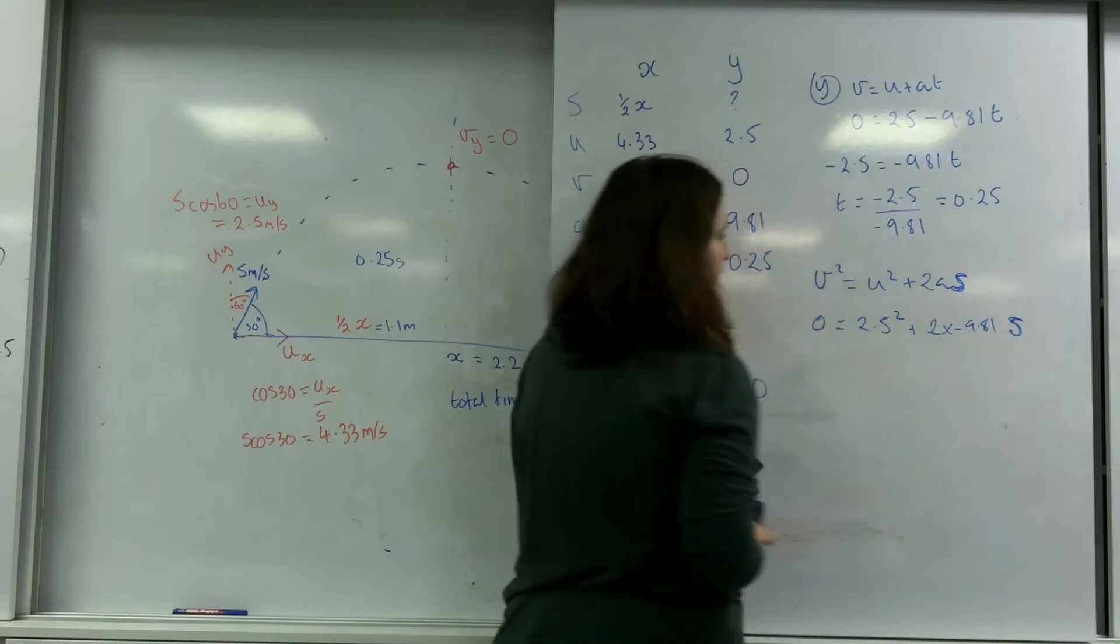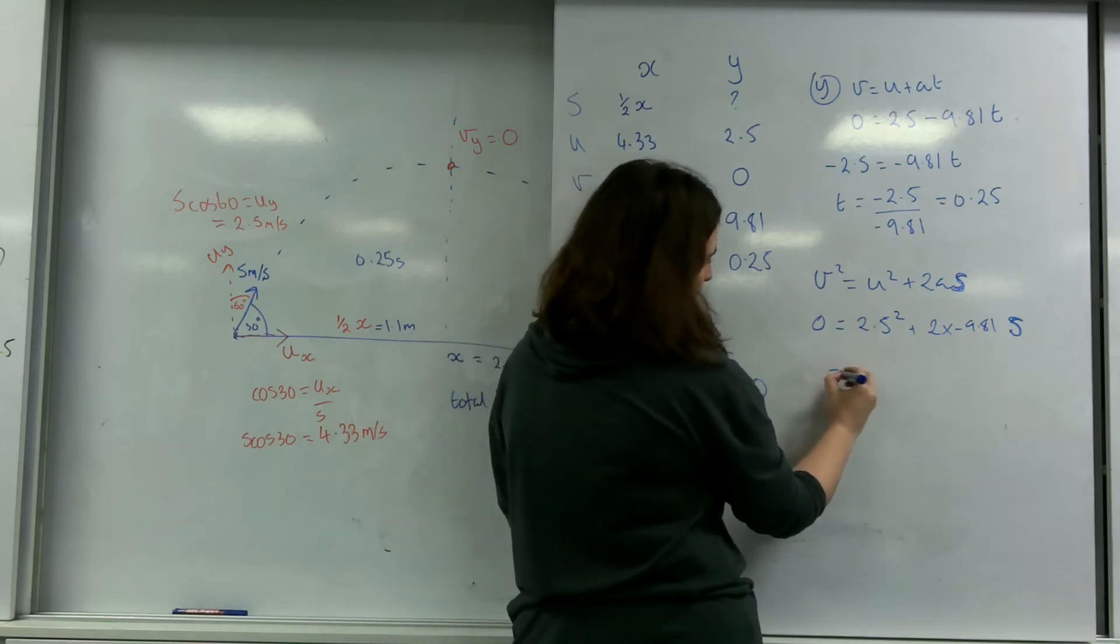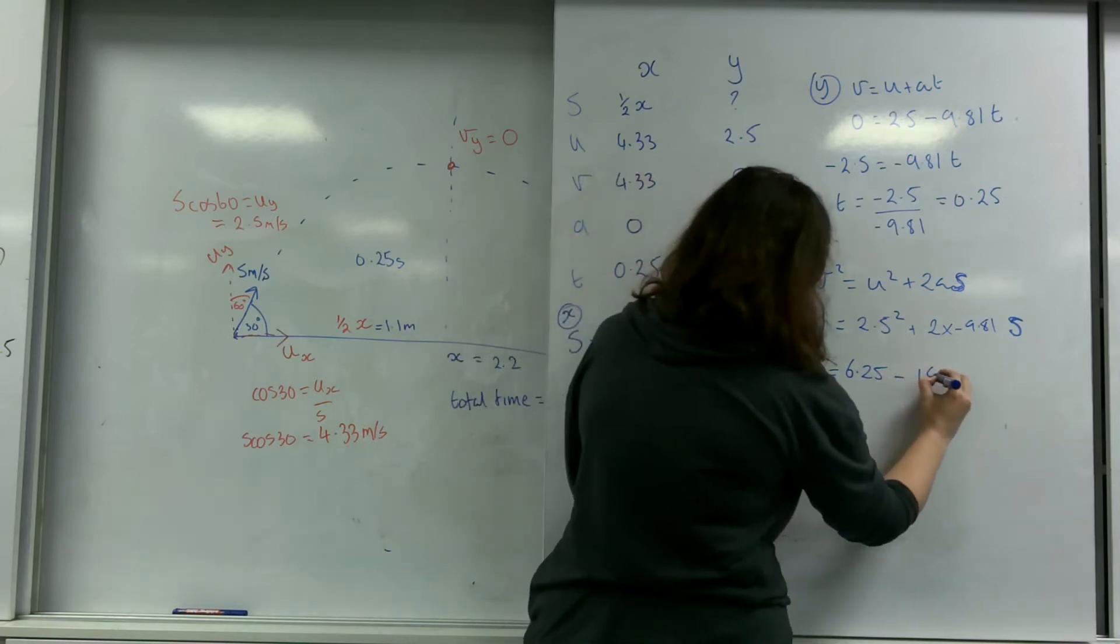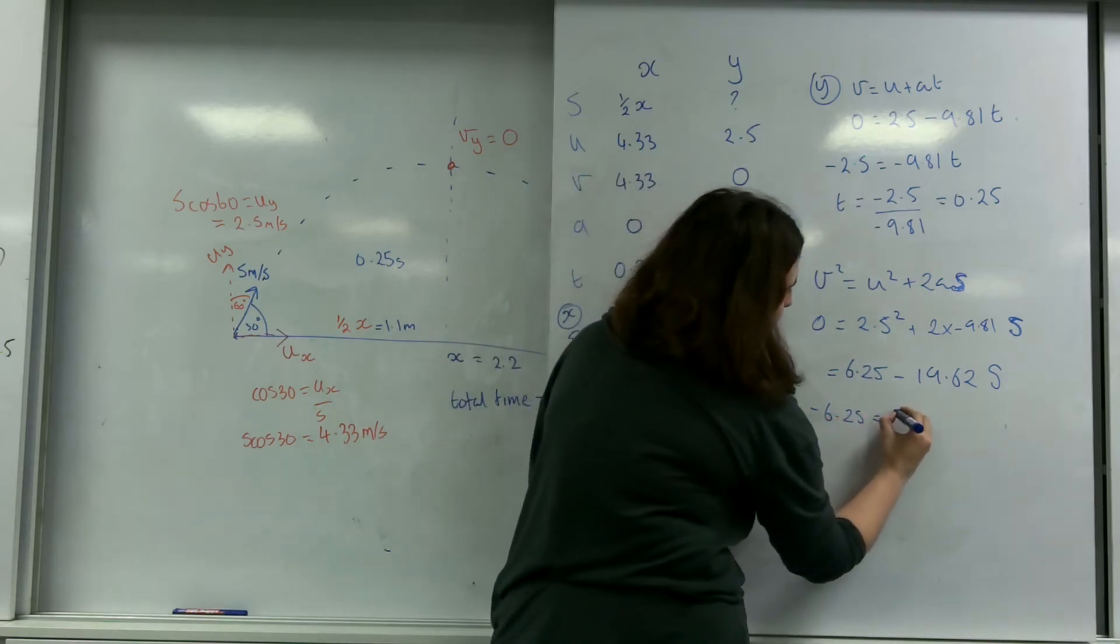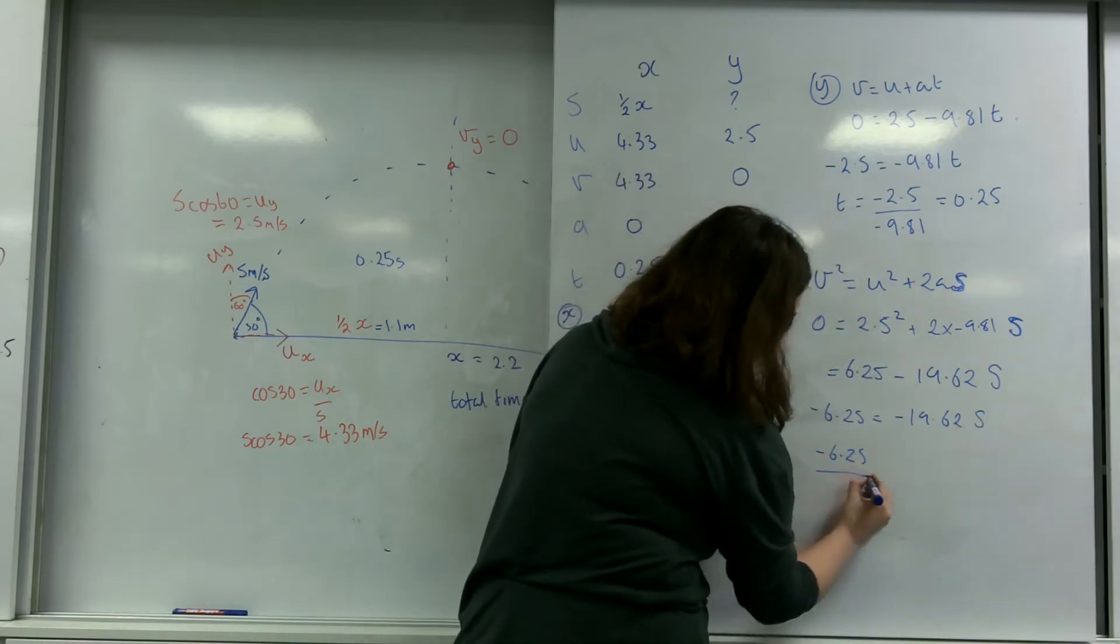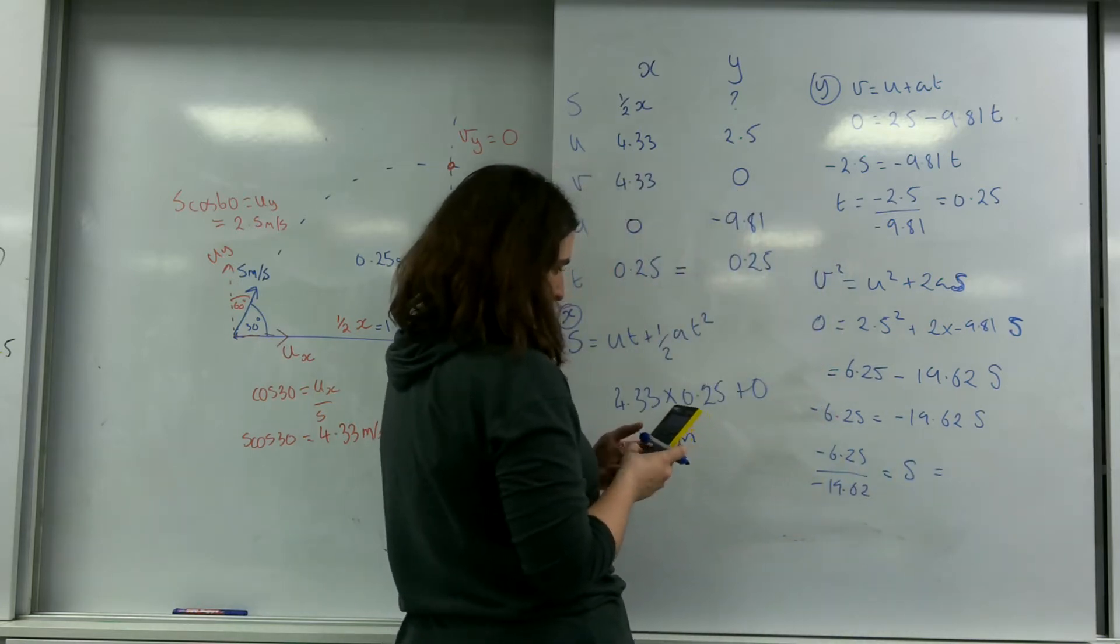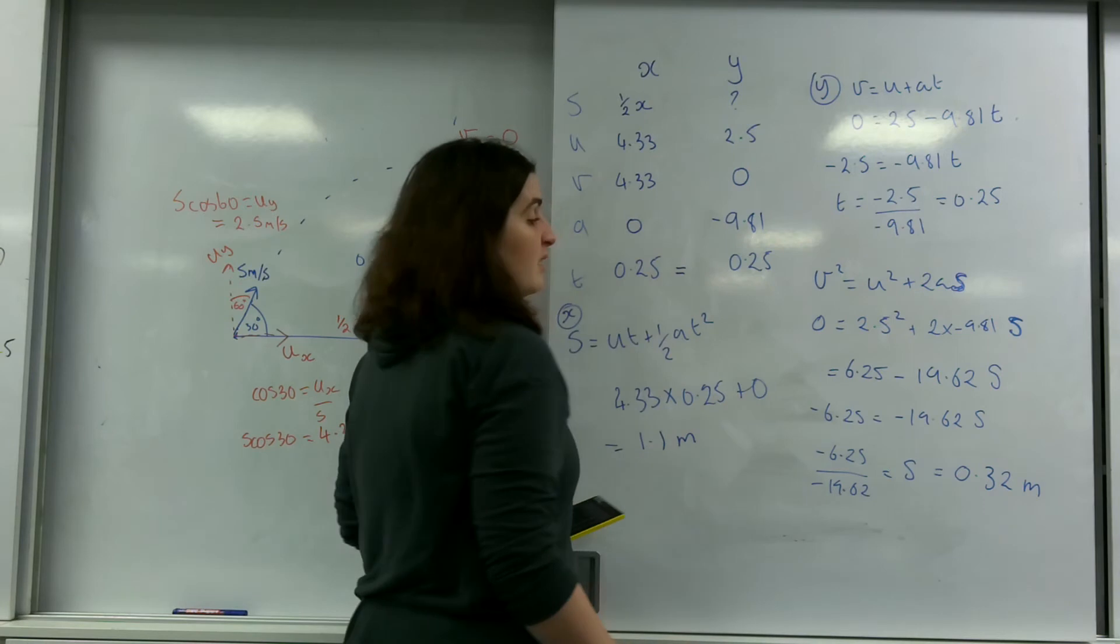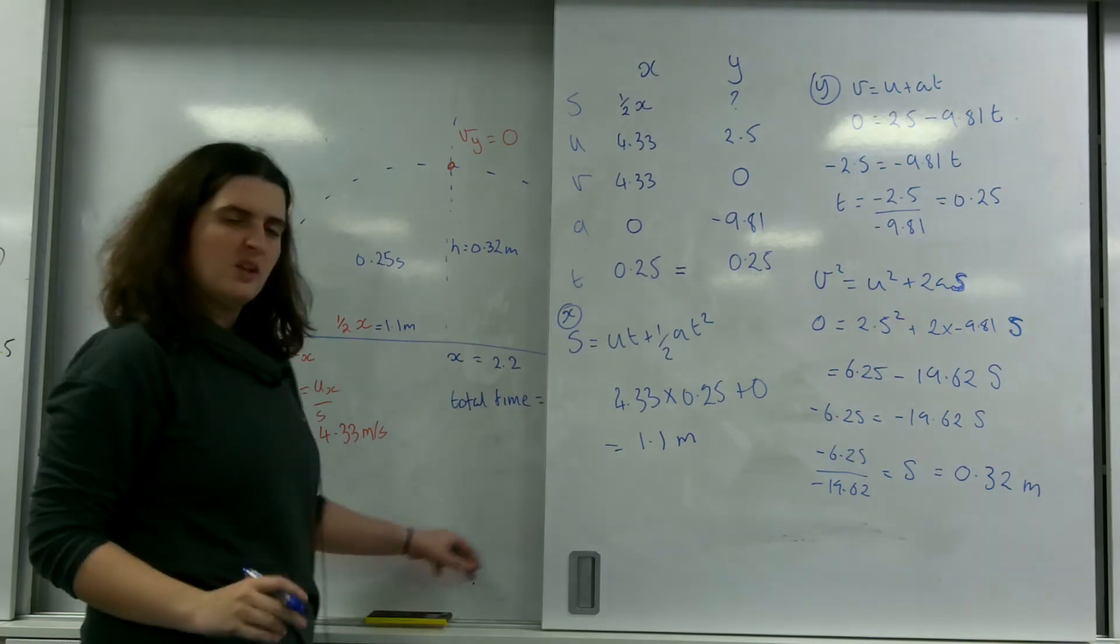So 2.5 squared, so 6.25 minus 2 times 9.81, 19.62 S minus 6.25 equals minus 19.62 S. So minus 6.25 over minus 19.62 equals S, which equals 0.32 metres. So the maximum height of this was 0.32 metres.